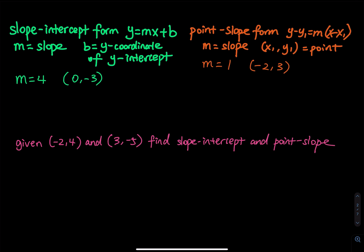When you write the equation of a straight line, there are two ways to write this equation. You can either put the equation in slope-intercept form, which is y equals mx plus b, where m is the slope of the straight line, and b is the y-coordinate of the y-intercept.